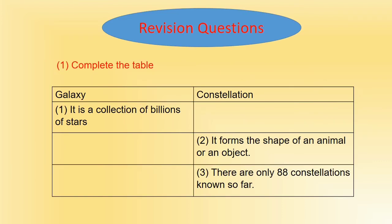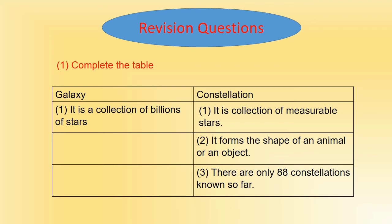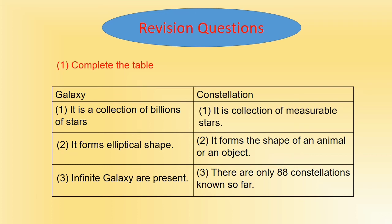Let's revise with some revision questions. Question number 1: complete the following table comparing galaxy and constellations. A galaxy is a collection of billions of stars, while a constellation is a collection of a smaller number of stars. A constellation forms the shape of an animal or an object, while a galaxy forms an elliptical shape. There are only 88 constellations known so far, but infinite galaxies are present in space, though only a few are known.